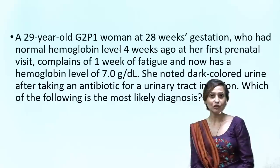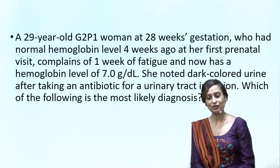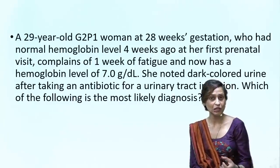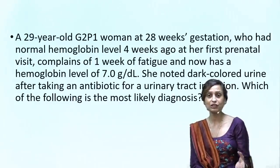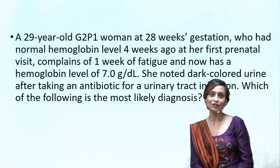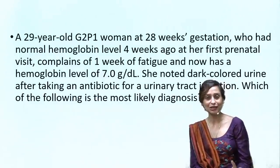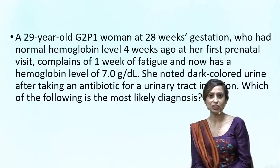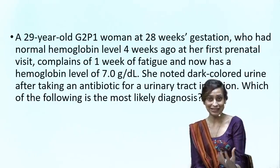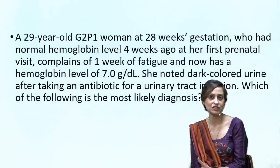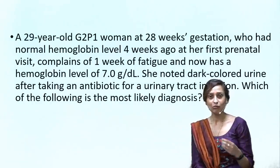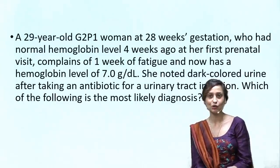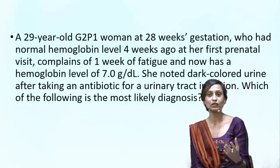Looking at this question: history of fatigue, a sudden drop in hemoglobin levels to significantly low values, and dark colored urine — what does it tell you? Probably all of this is linked to or pointing us toward hemolysis. Following something, we have all the features of hemolysis: pallor — this woman on clinical examination is going to be pale — and a significant reduction in hemoglobin levels.